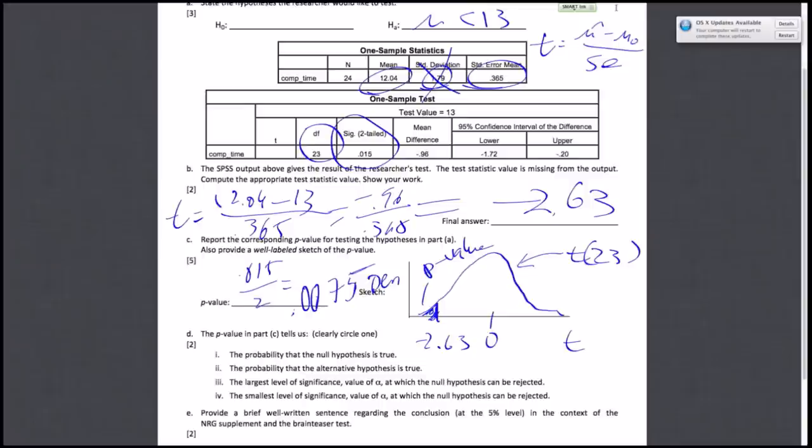Part D: the p-value in part C tells us one of four answers. The answer is option 4: the smallest level of significance value of alpha at which the null hypothesis can be rejected. Basically, if you have a p-value of, for example, 0.07, what's the lowest alpha at which you would reject? That's exactly the p-value.